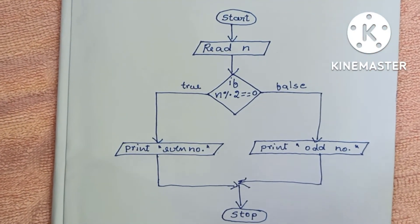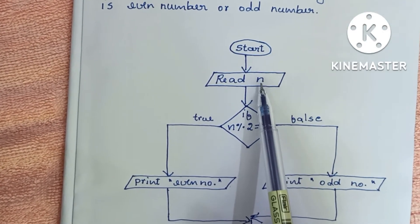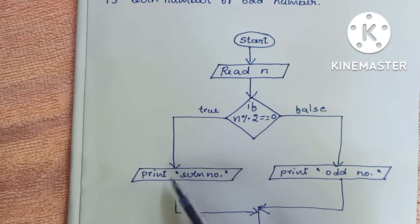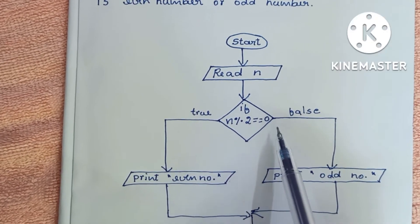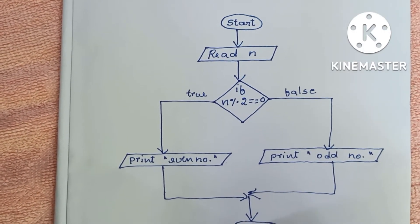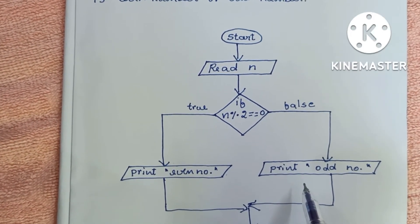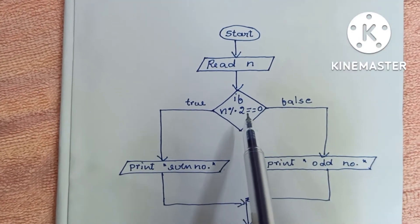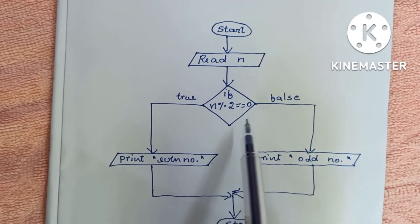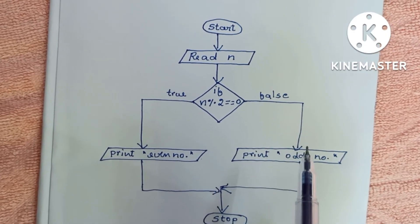This is the complete flowchart to find whether a given number is even or odd. It starts with the start statement, then reads variable N, then checks if N modulo 2 equals 0 — if true, print even number; if false, print odd number — and ends with the stop statement. Start and stop are in oval shapes, input/output in parallelogram shapes, and comparisons in diamond shapes.